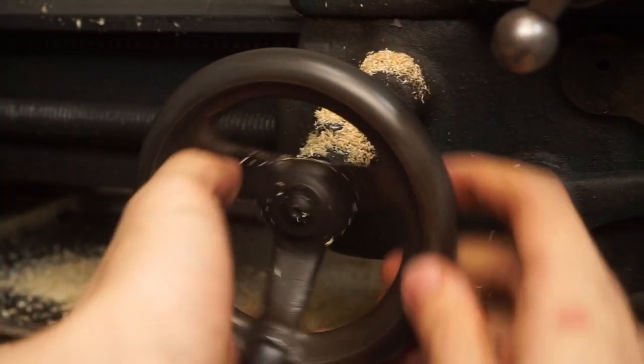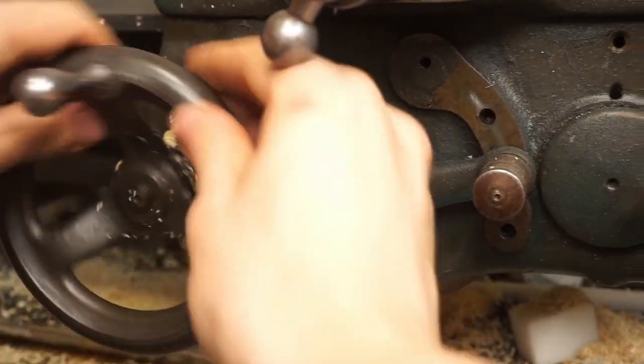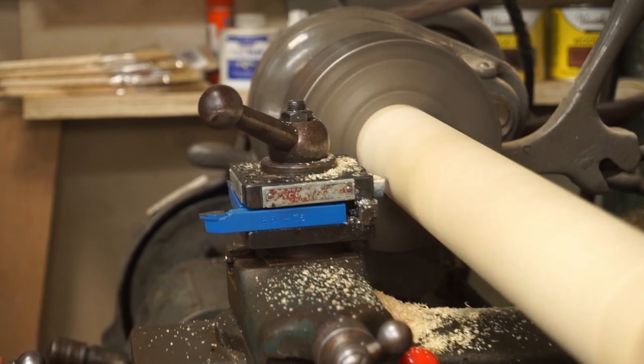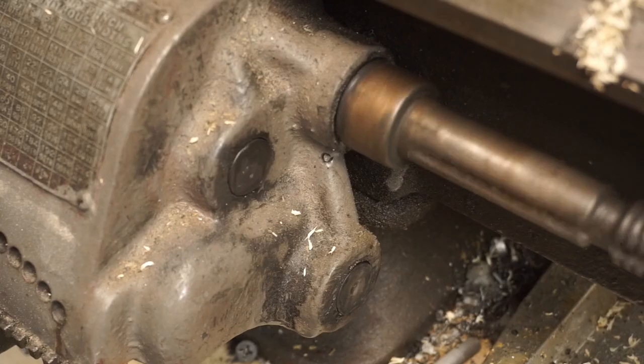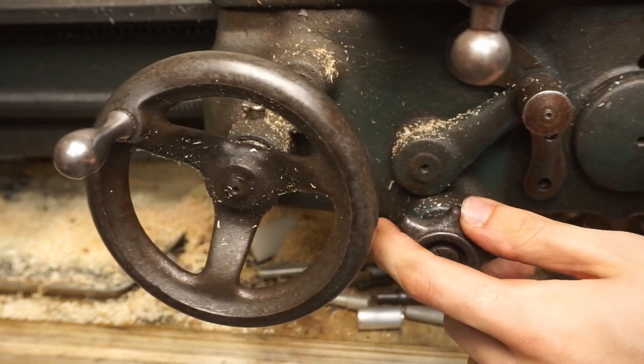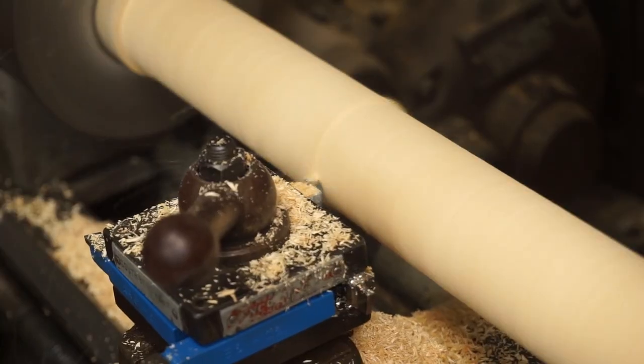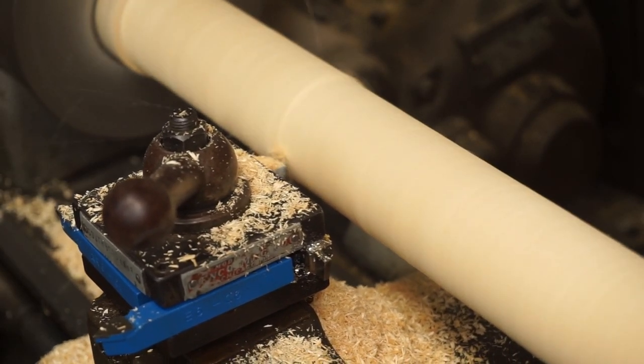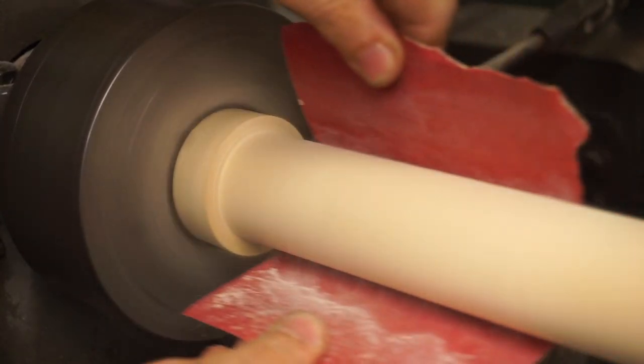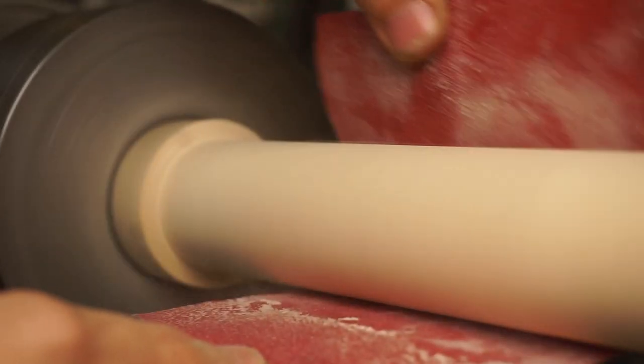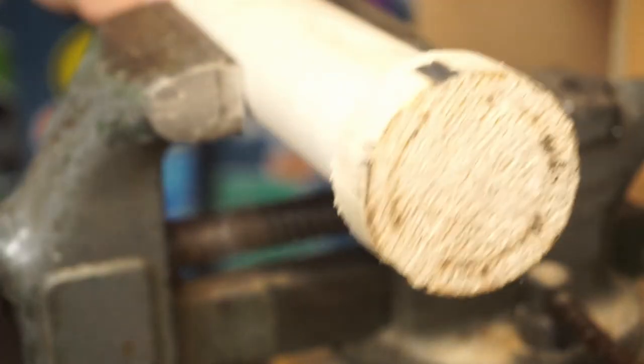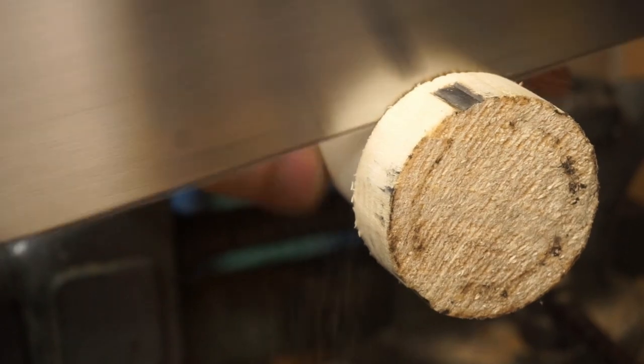I started out by hand feeding each pass, mostly because I wanted to get a feel of what sort of depth of cut and feed rate would be appropriate. Later on, I switched to the auto feed. Eventually, I switched over to sandpaper to remove the final 20 thousandths or so of material. A small, unmachined bit remained at the end, so we'll cut that off. Good thing I gave myself the extra tolerance.